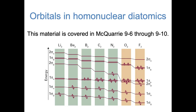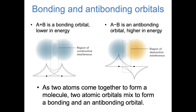In the previous video, we looked pretty carefully at the simplest chemical bond, H2+. In this video, we're going to be a bit more qualitative in extending the ideas that we learned to homonuclear diatomic molecules. The punchline of the previous video is that when two atomic orbitals come together in a molecule, they tend to form two molecular orbitals: a bonding orbital that's lower in energy and an antibonding orbital that's higher in energy. We're going to see this over and over again as we think about diatomic molecules.